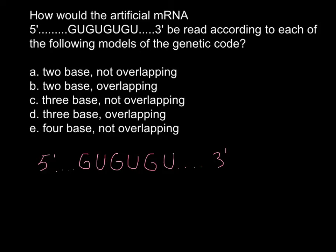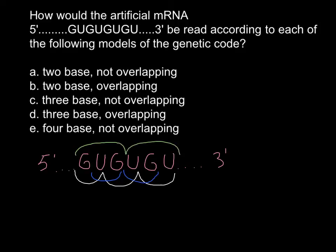Answer A gives us a model with two bases that is non-overlapping. Answer B gives us two bases but overlapping. Answer C gives us three bases that is non-overlapping. Answer D gives us three bases that are overlapping — and overlapping can be like this or like this, so two overlapping possibilities. Answer E gives four bases non-overlapping, which I won't draw here so as not to clutter the picture — you can imagine it yourself.